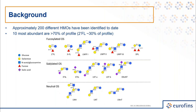There are approximately 200 different HMOs that have been identified to date. About greater than 70% of this profile is comprised of 10 of these, with 2-FL or 2-fucosyllactose representing about roughly 30% of the profile. These are typically categorized into three different areas: fucosylated, sialated, and neutral.